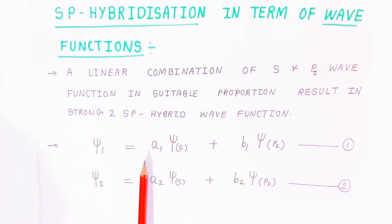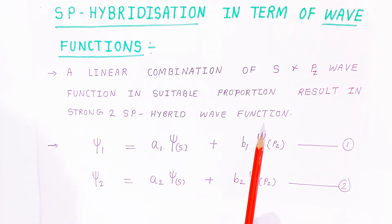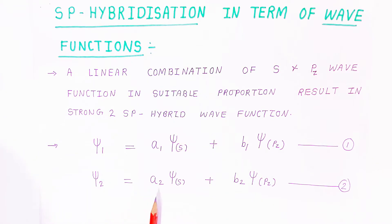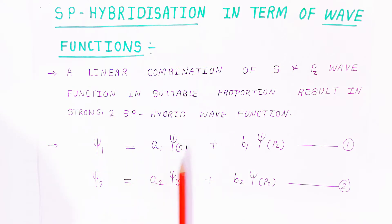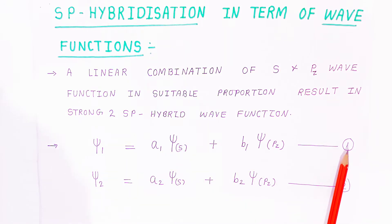The first SP hybrid wave function is Ψ₁ = A₁ψS + B₁ψPZ. The second SP hybrid wave function is Ψ₂ = A₂ψS + B₂ψPZ. This is equation 1 and this is equation 2.